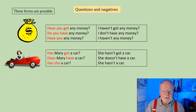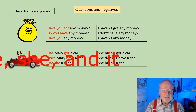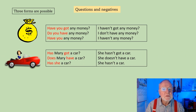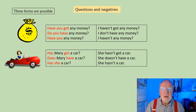The third person forms — that's he, she, it — look like this. Has Mary got a car? She hasn't got a car. Does Mary have a car? She doesn't have a car. Has she a car? She hasn't a car. And like the previous ones, really the last one would be a little unusual because it does sound too formal.